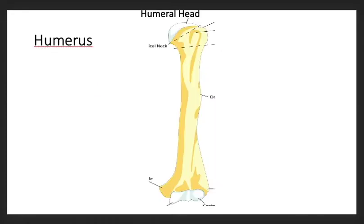We move on to the upper limb, which includes the humerus. We have the humeral head at the very top, greater tuberosity, lesser tuberosity, and the surgical neck.